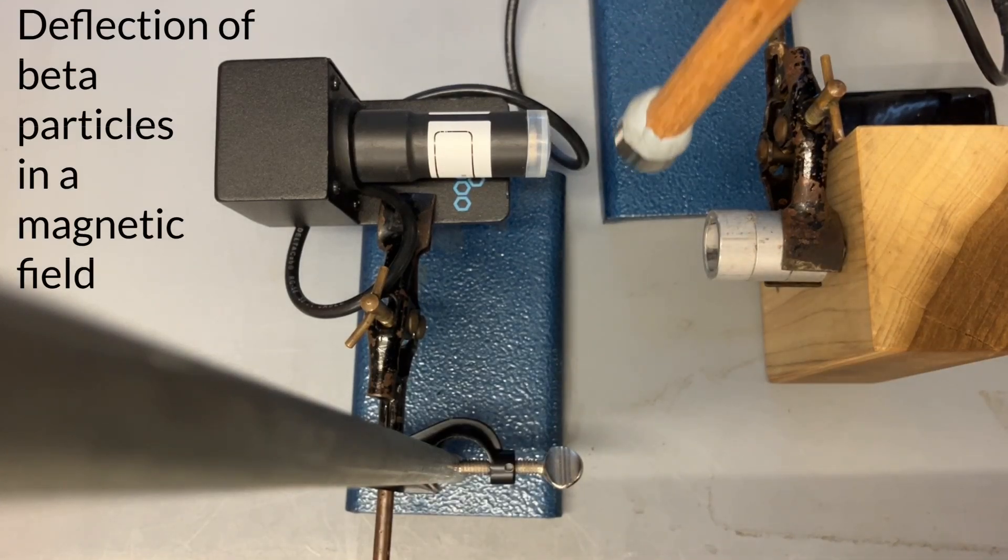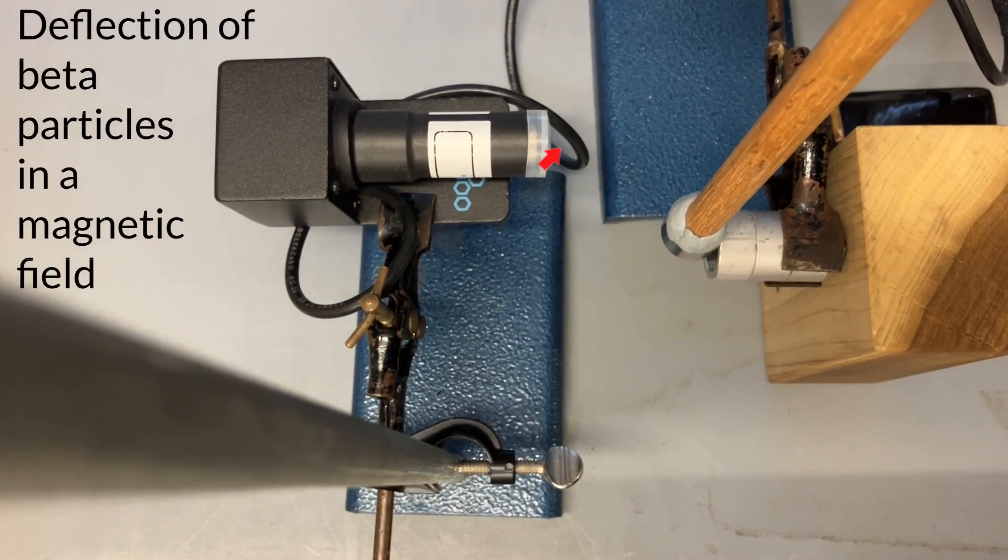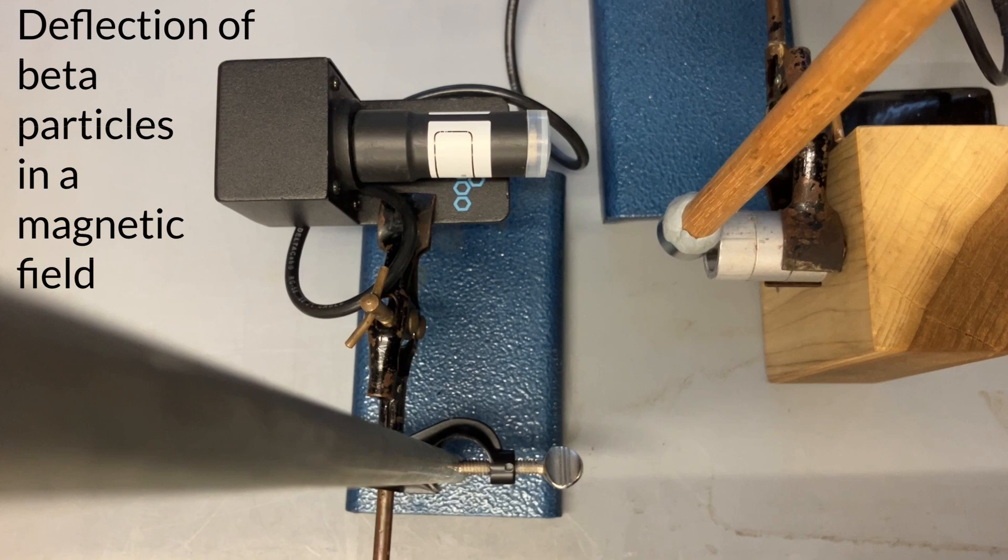In this video, I'm going to use a magnet to deflect beta minus particles into the Geiger-Müller tube.